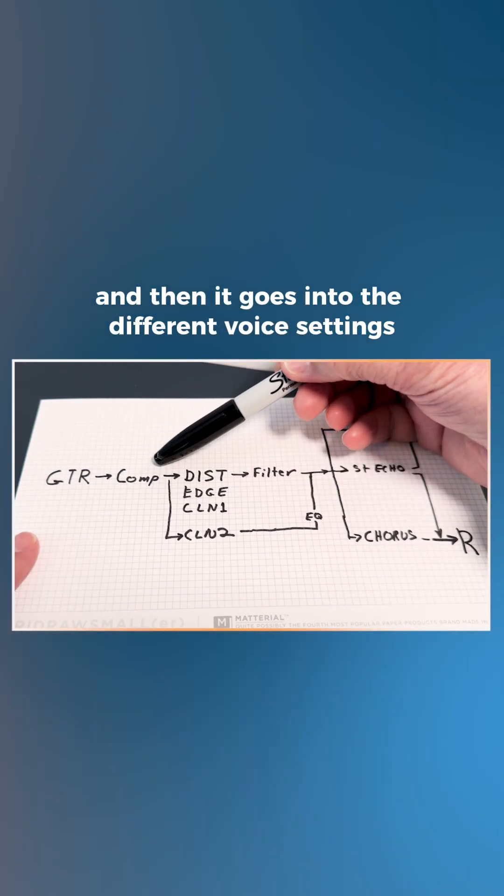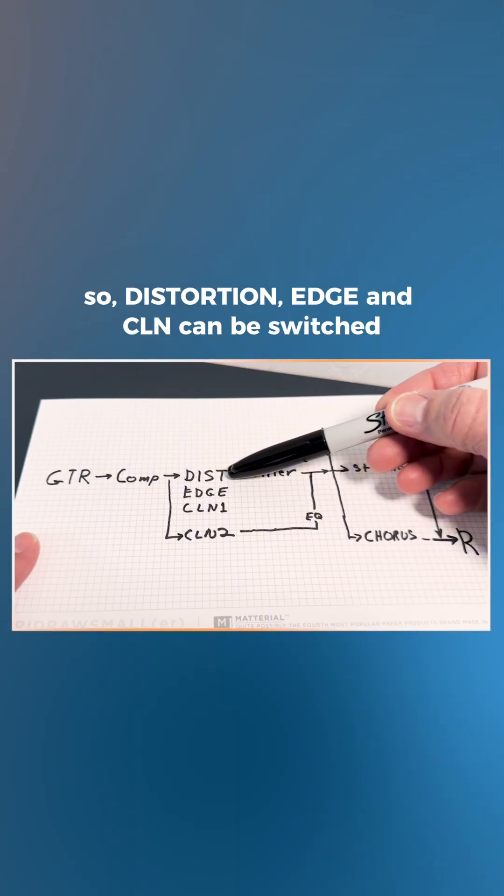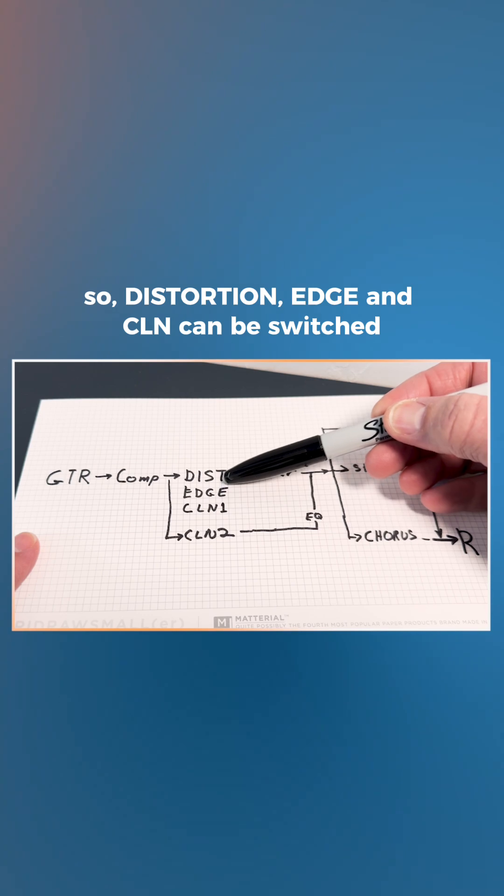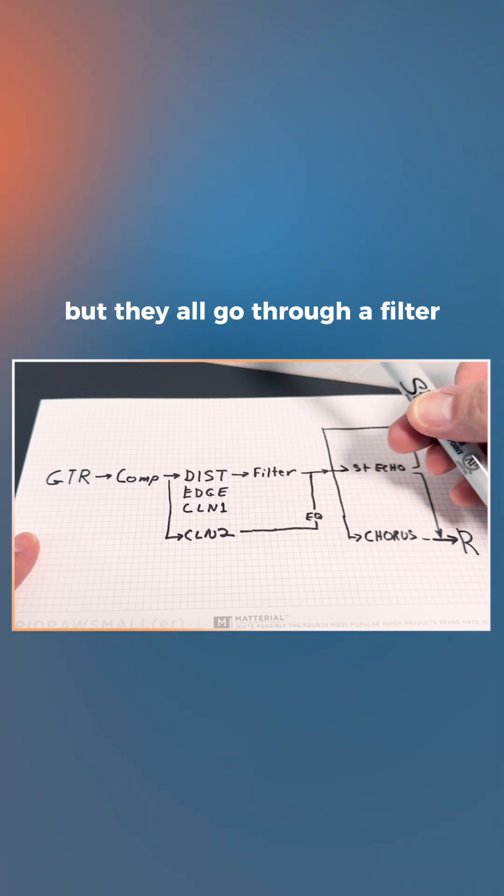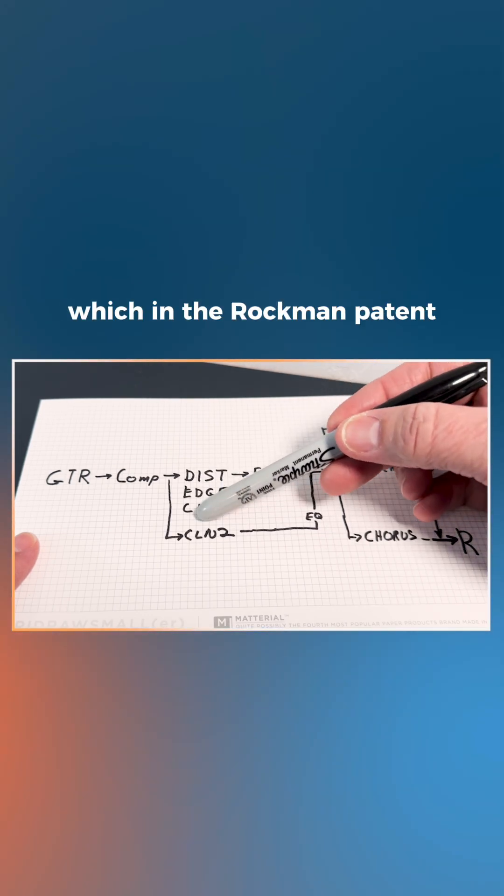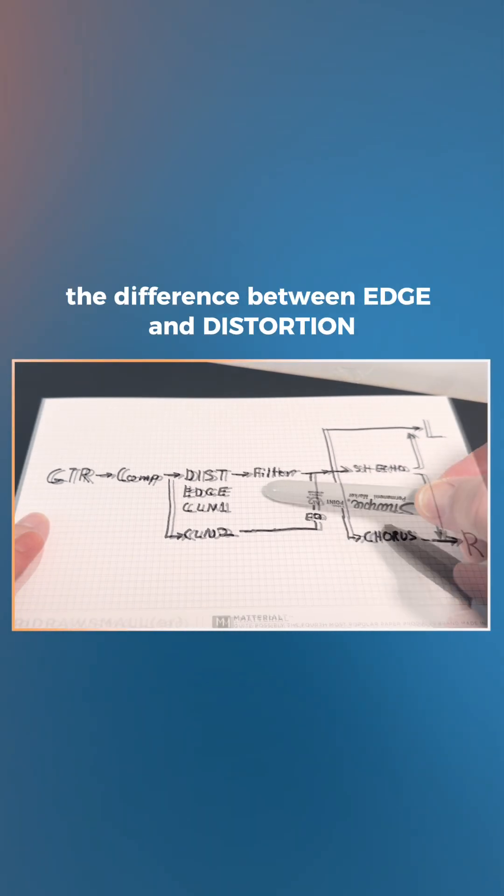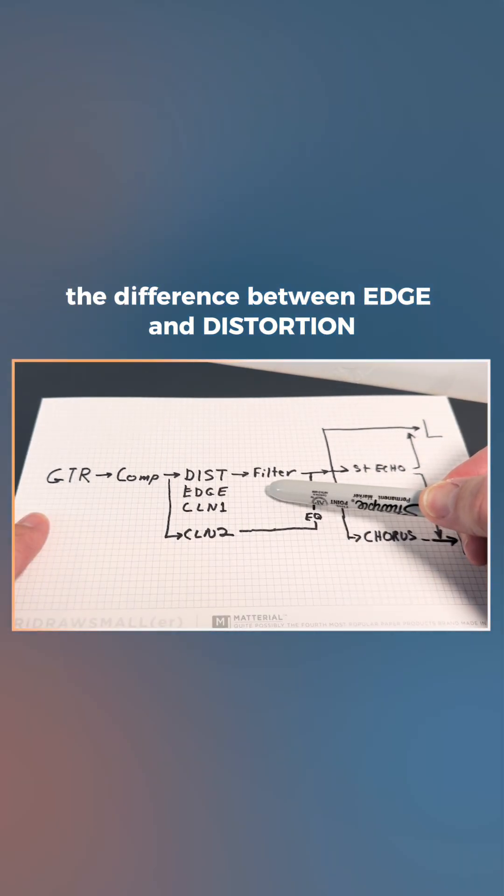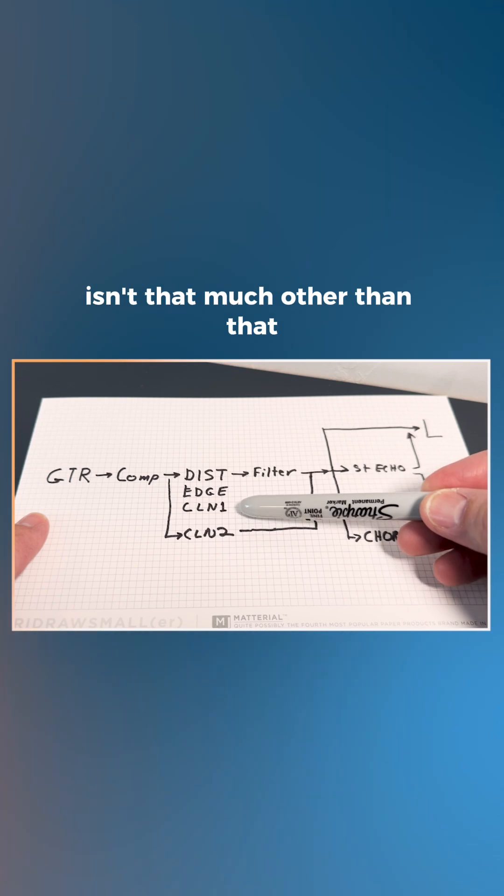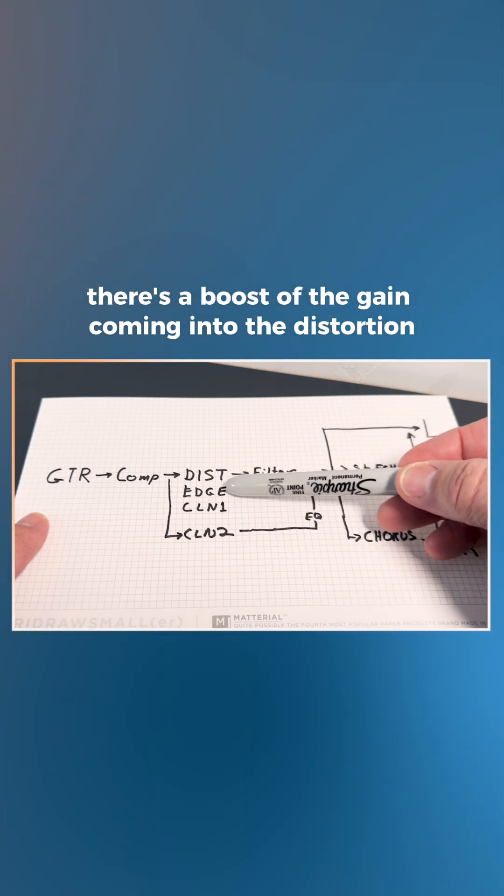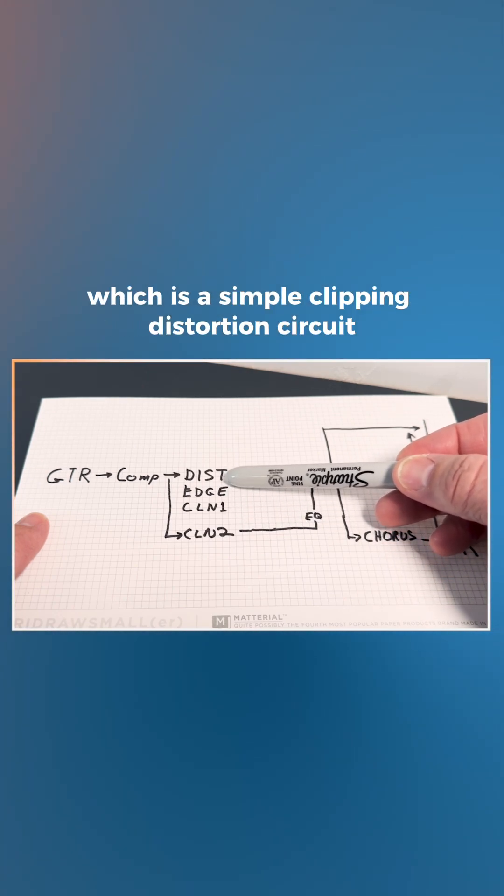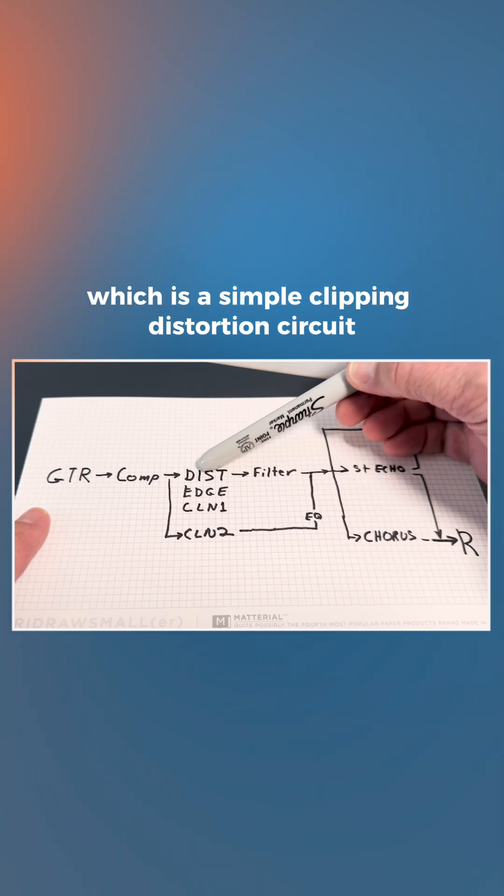And then it goes into the different voice settings. So distortion, edge, and clean can be switched, but they all go through a filter, which in the Rockman patent is called the complex filter. The difference between edge and distortion isn't that much other than that there's a boost of the gain coming into the distortion, which is a simple clipping distortion circuit.